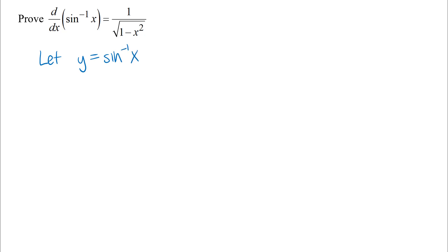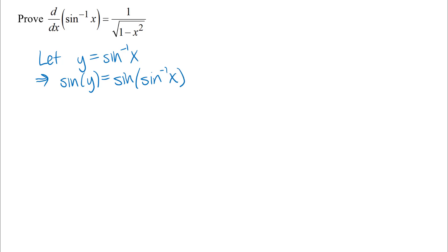Since this is an inverse function there are a couple of ways we can go, but I'm going to use the idea of what it means to have an inverse function. The sine inverse function is the inverse of the sine function, so if I apply the sine function to both sides of the equation, sine of y equals sine of sine inverse of x. The idea with a function and its inverse is that they undo each other, so we can rewrite this as sine of y equals x.